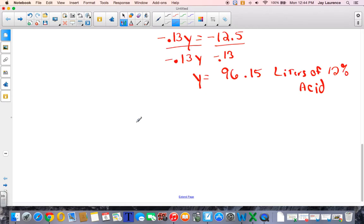Now, to get my other one, I'm just going to use x equals 250 minus y. There's y right there, 96.15. So, 250 minus 96.15. And so then x would be approximately, it's a rounded answer, so it's off by a little bit, but 153.85 liters of the 25% acid.